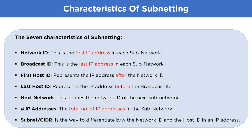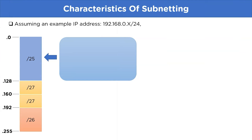To better understand all the attributes of subnetting let's take a look at an example. We are assuming an IP address 192.168.0.x with a subnet mask of /24. For this IP address we have divided it into four parts representing /25, /27, /27, and /26. Now let's find out the attributes for the subnetwork /25.